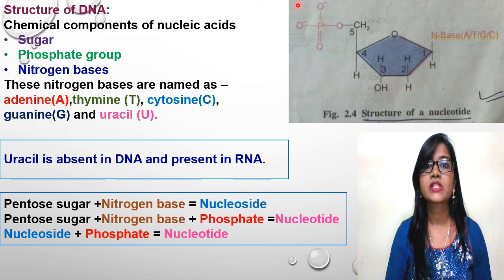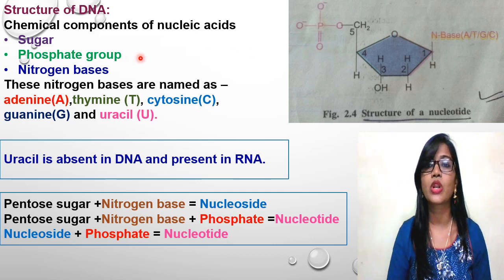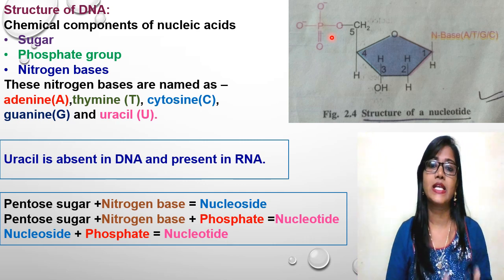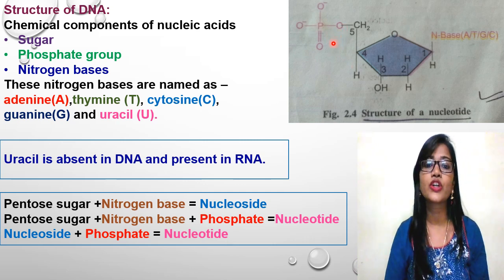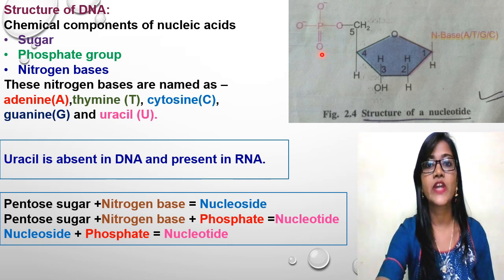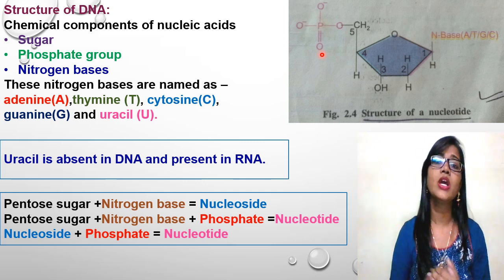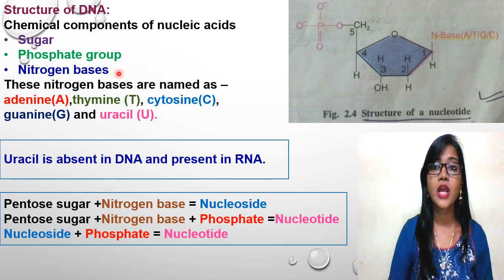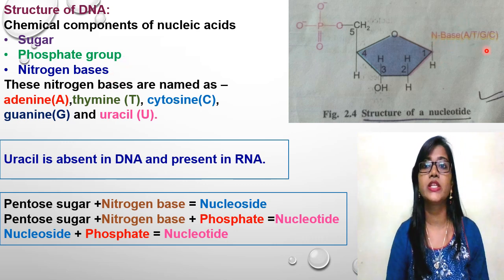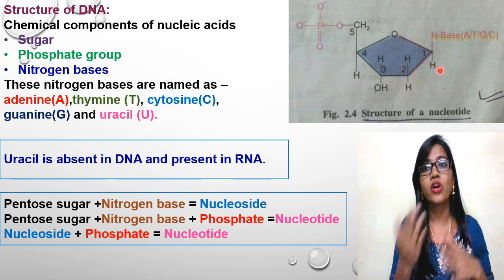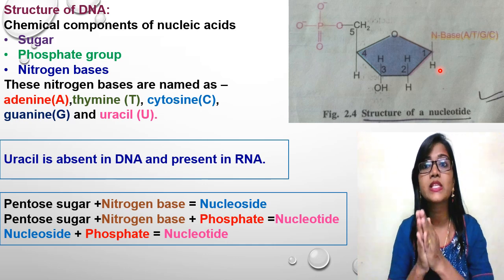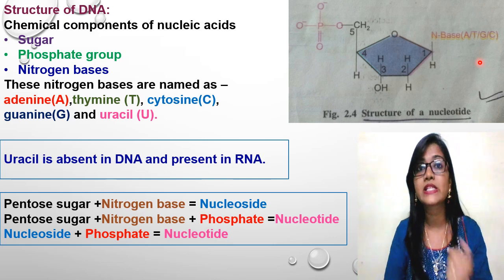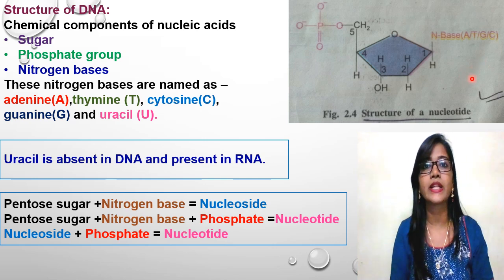The last component is nitrogen bases. The nitrogen base is either adenine, thymine, guanine, or cytosine. Any one nitrogen base is present in one nucleotide — not all four at a time. These are cyclic compounds made up of carbon, hydrogen, oxygen, and nitrogen atoms. The bases are adenine, thymine, cytosine, guanine, and uracil.